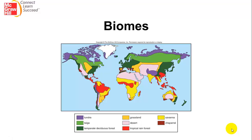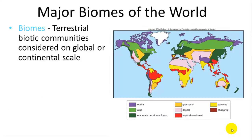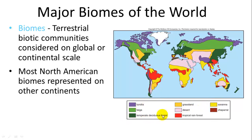Today this lecture is on biomes. Biomes are important globally, talking about different types of ecosystems, but they are generally described by the species of plant that is dominant there. A biome is defined as a terrestrial biotic community — the living things of the environment — considered on a global or continental scale. These are the biomes of the world, and we're going to keep it simple for the purpose of this botany class.